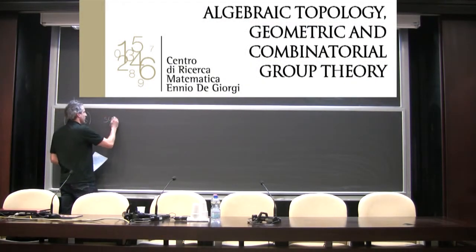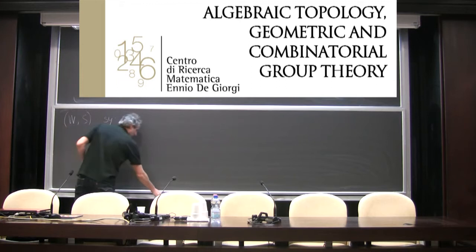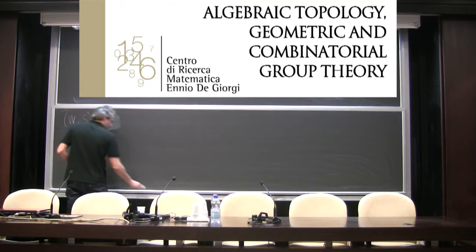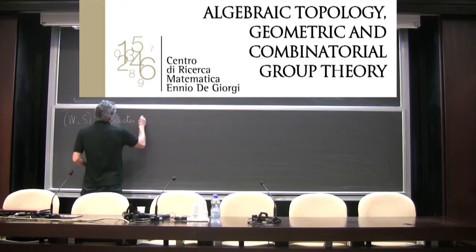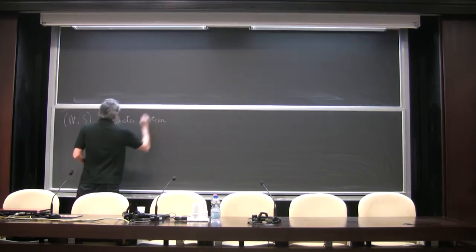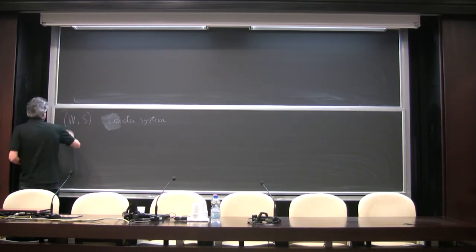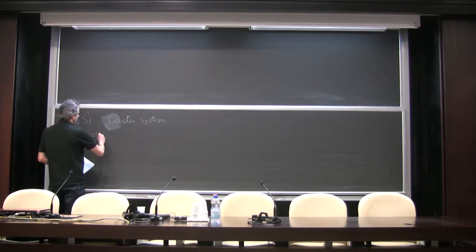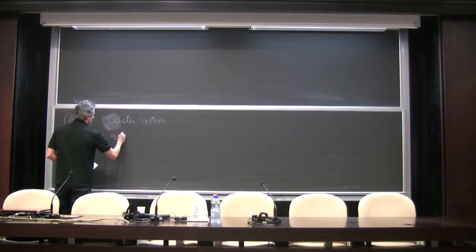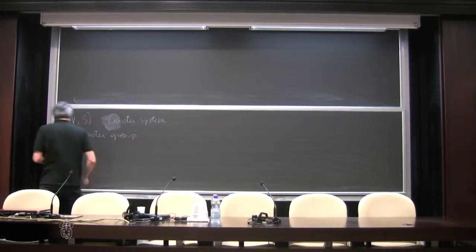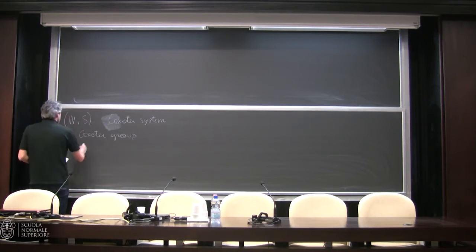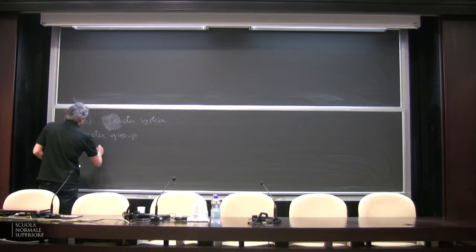WS here talks to the system, which means that W is a constant Coxeter group, and S is always a finite set of generators.